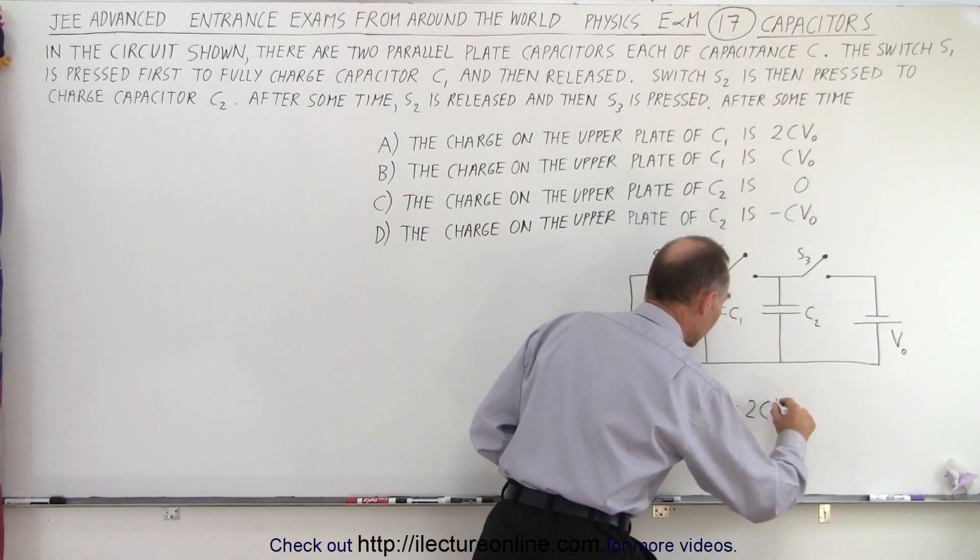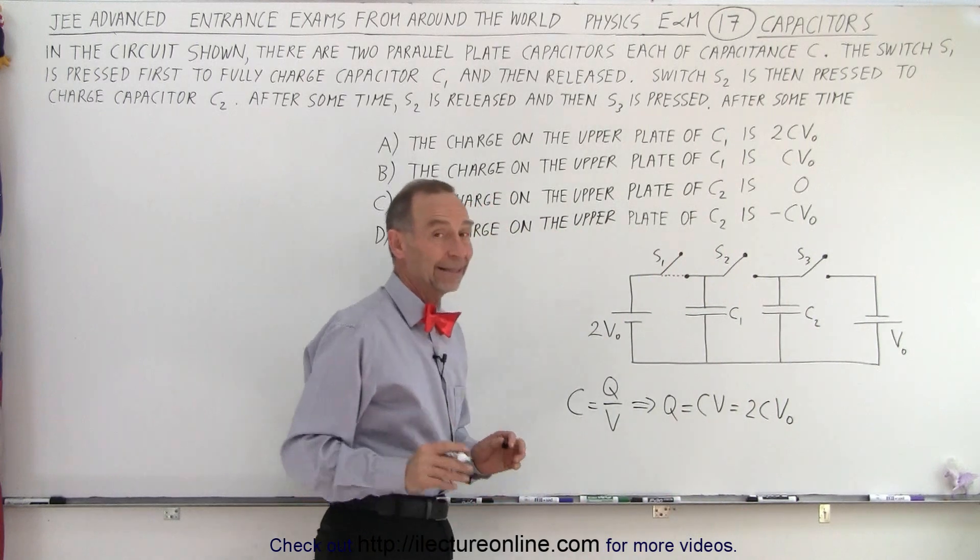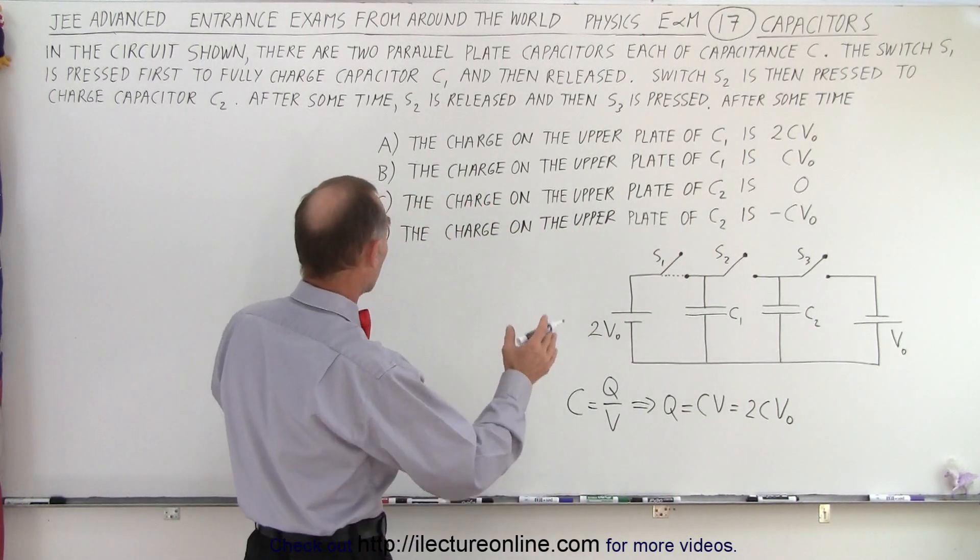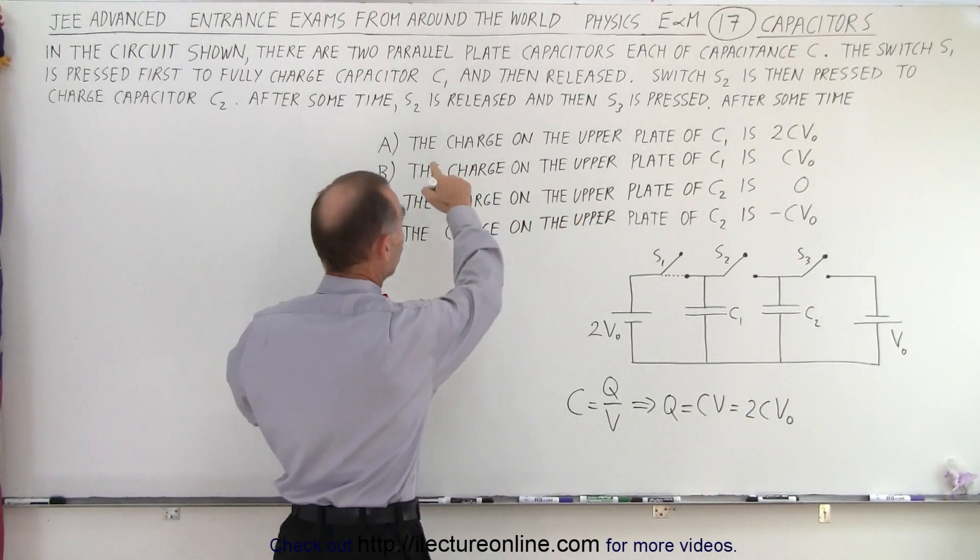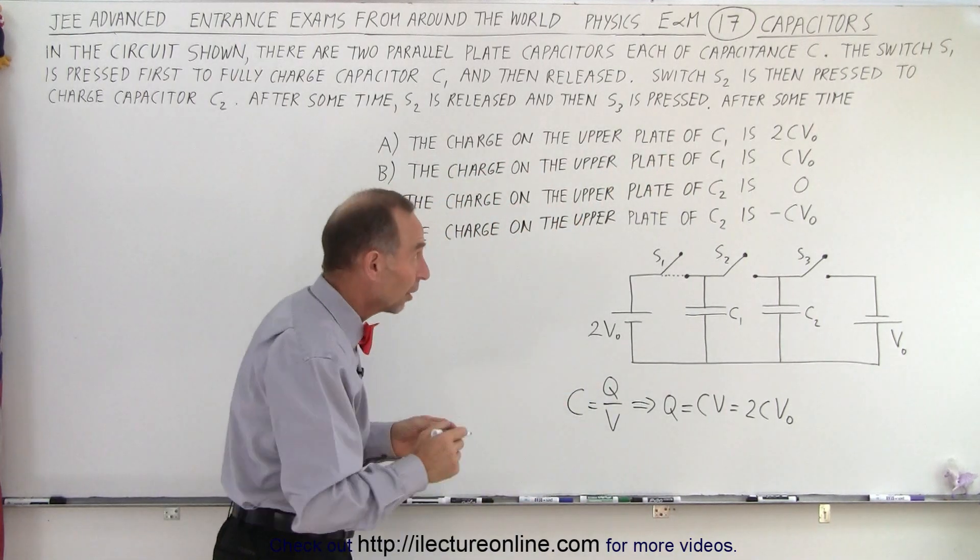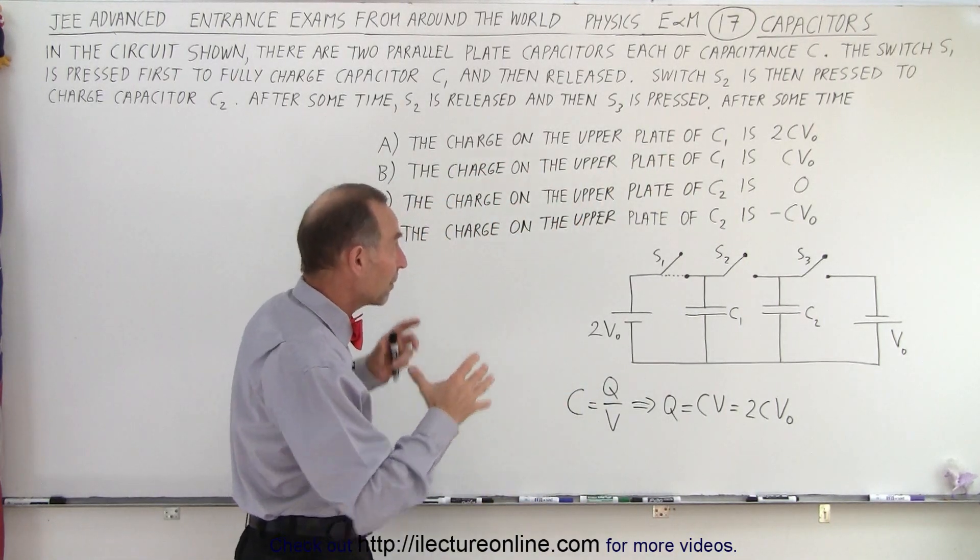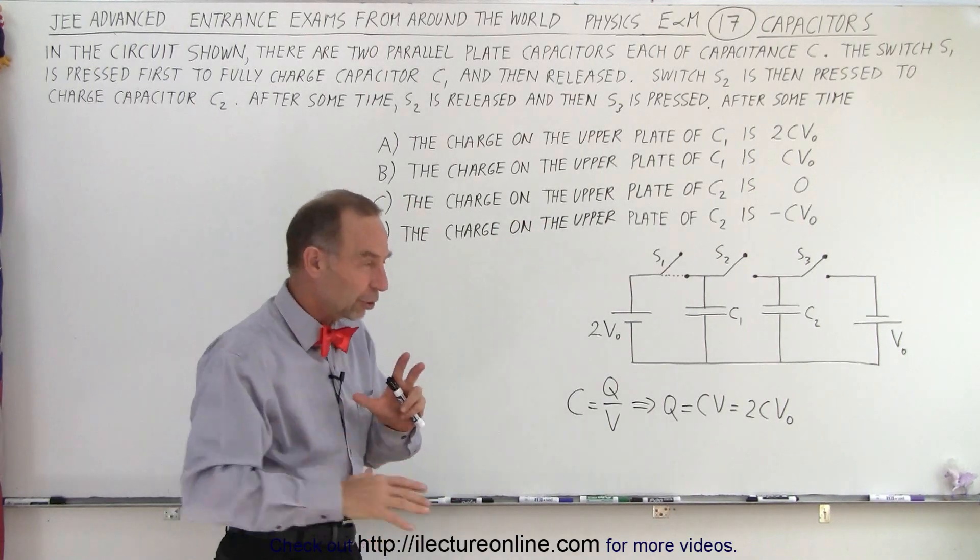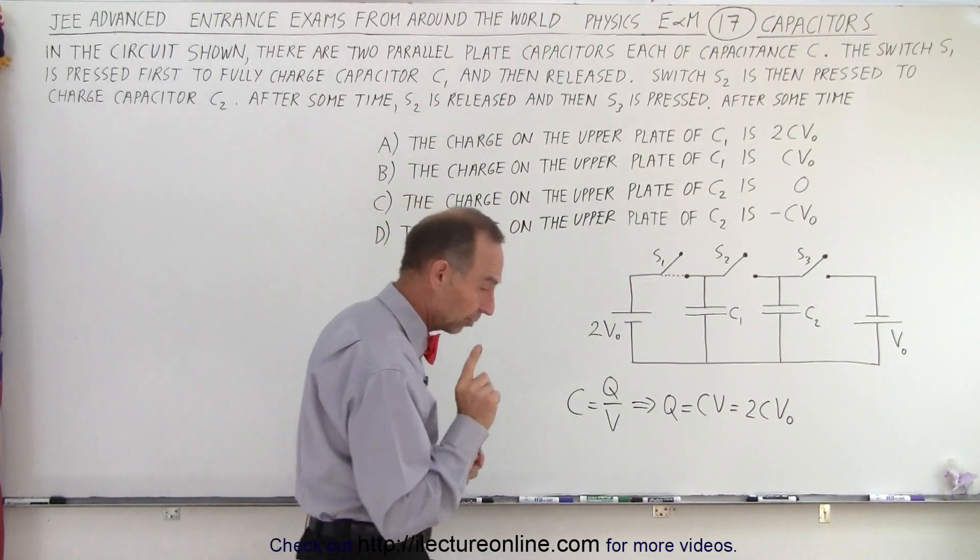So this becomes 2CV₀, and then the danger is to look at the answer and go, oh A says the charge in the upper plate capacitor is 2CV₀ and you might say that's the correct answer, but you have to go to the whole process first before you start answering the questions.